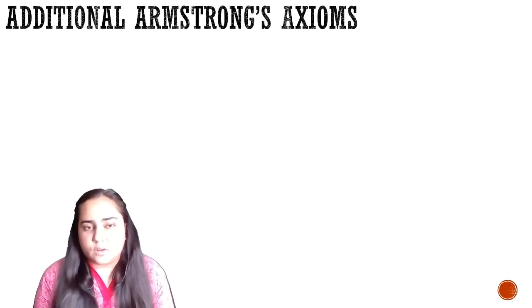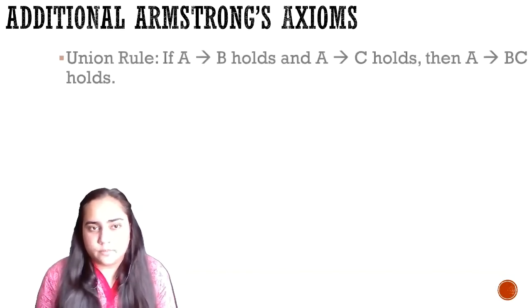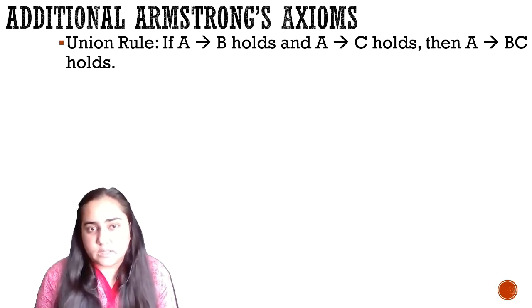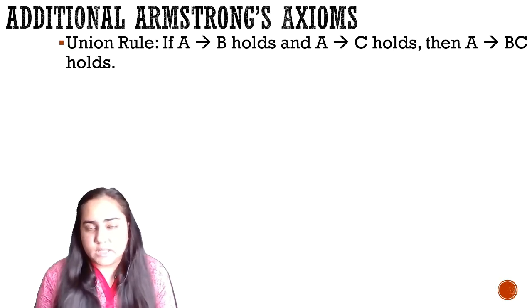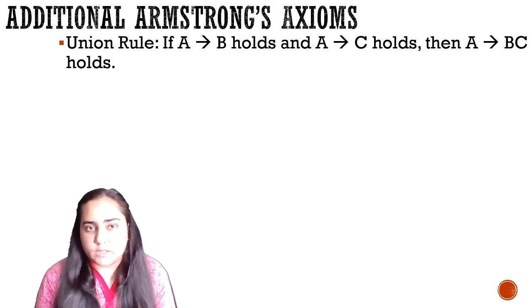To make your work easier when reducing functional dependencies, there are additional rules derived from the three basic ones. Many more rules can be derived; I'll show the ones I'll be using in these videos. The first additional rule is the union rule: if A determines B holds and A determines C holds, then A determines BC holds. In both dependencies the left side is just A, which is common, so you can merge the right sides to get BC.